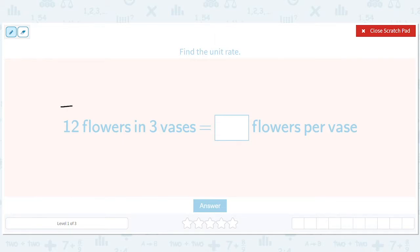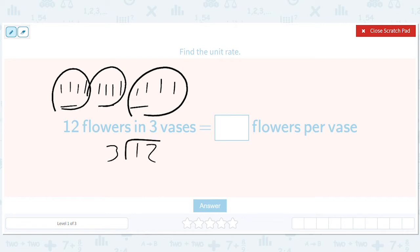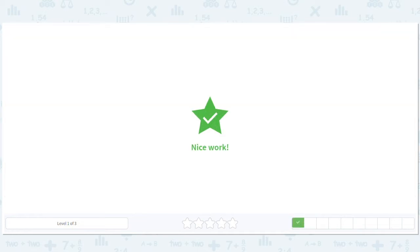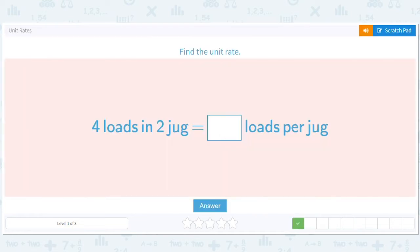Three vases, there are 12. You could kind of do it the long way like this and realize, oh, there are 4 flowers per vase. Or you could just take 12 divided by 3 and get 4, right? Because you're dividing by the number of groups, which is 3 groups, and you get 4 per group.